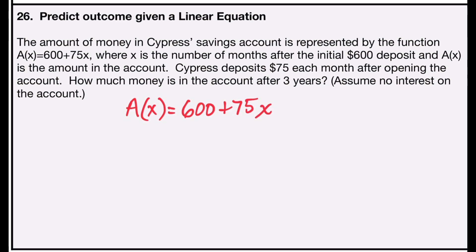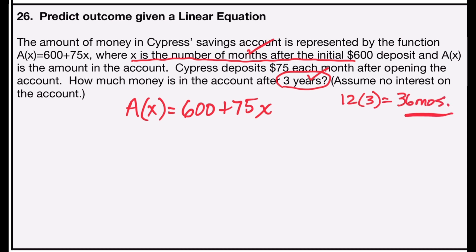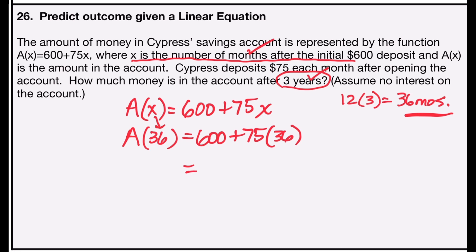We have a(x) = 600 + 75x, where x is the number of months. They're asking about three years, so we convert: 12 months × 3 years = 36 months, meaning x = 36. Substituting: a(36) = 600 + 75 × 36. Using order of operations, 75 × 36 = 2700, then 600 + 2700 = 3300. After 36 months, there will be $3,300 in Cypress's account.